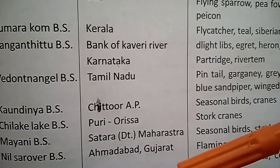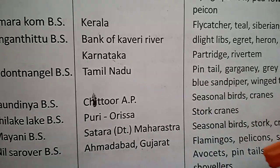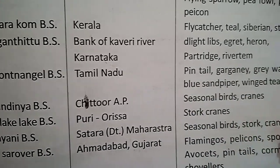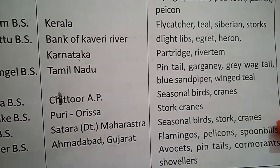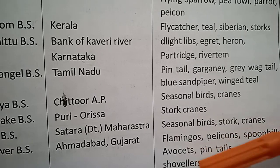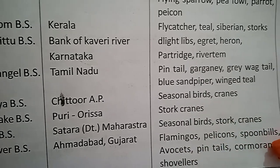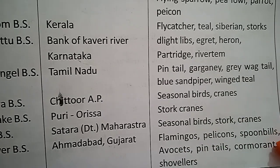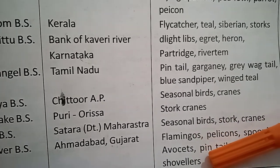Nal Sarovar Bird Sanctuary, located in Ahmedabad, Gujarat. The migratory birds found here include flamingos, pelicans, spoonbills, coots, pintails, cormorants, and shovelers.